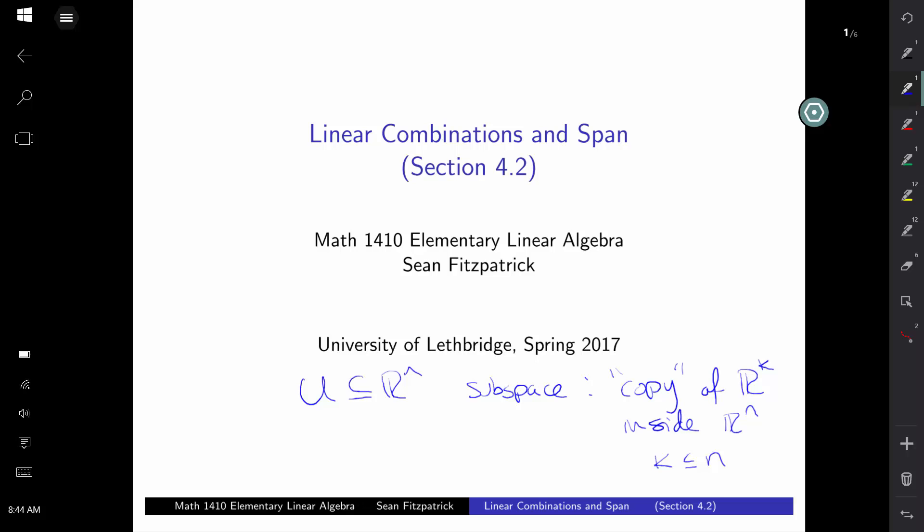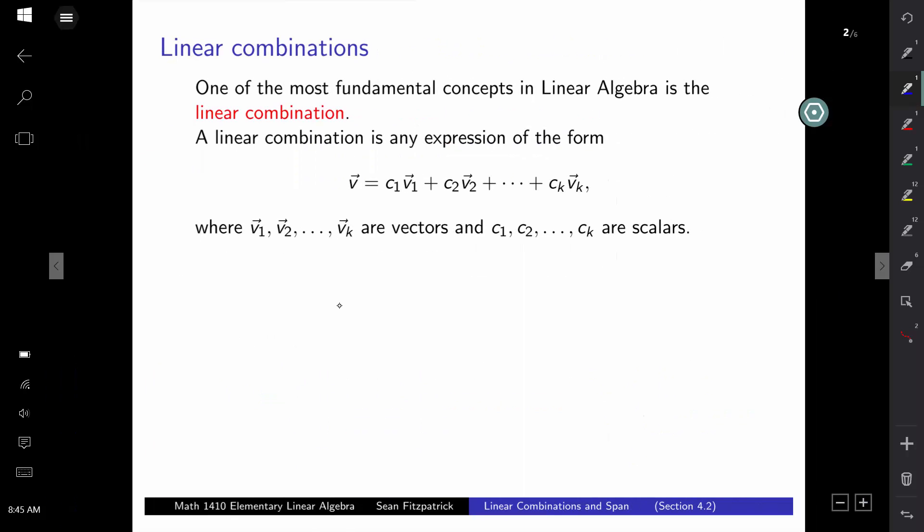The final example in the last video showed that one of the ways you can generate a subspace is by considering the set of all vectors that are generated by a pair of vectors using addition and scalar multiplication. This sort of operation is what's called a linear combination, and we'll see that in general, linear combinations are what allow you to generate subspaces.